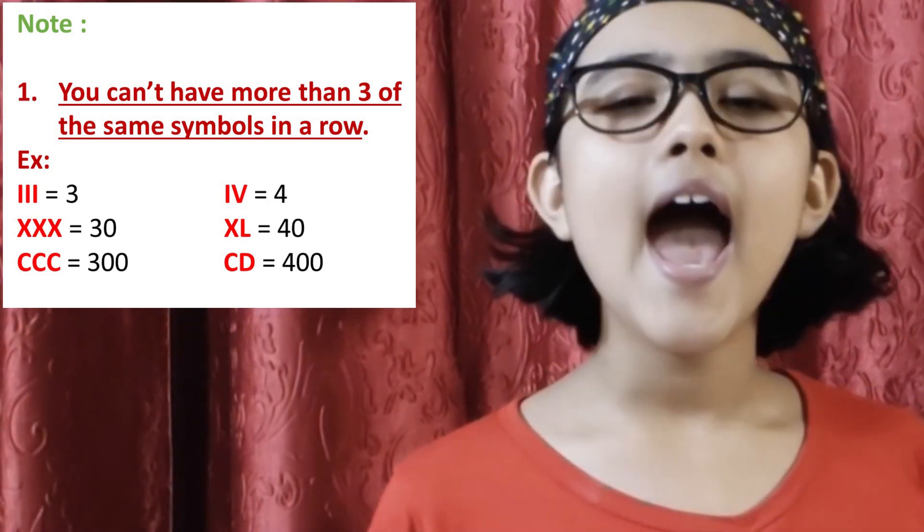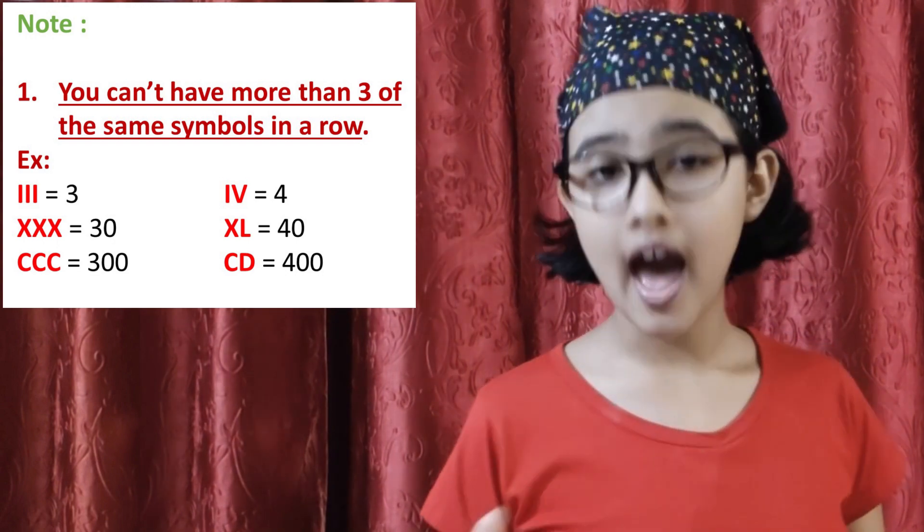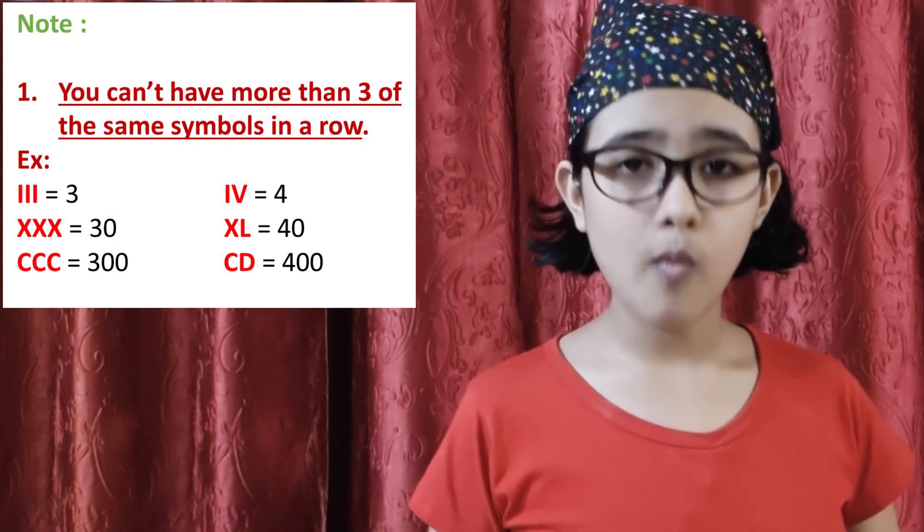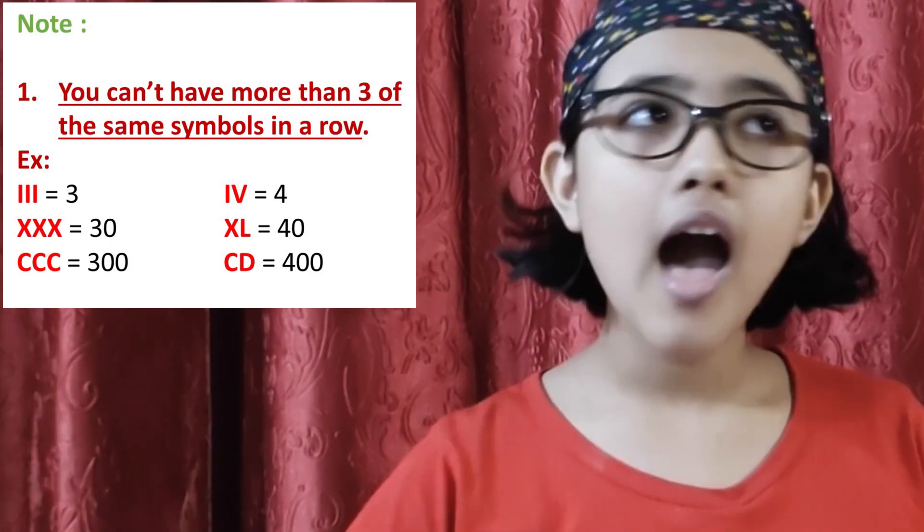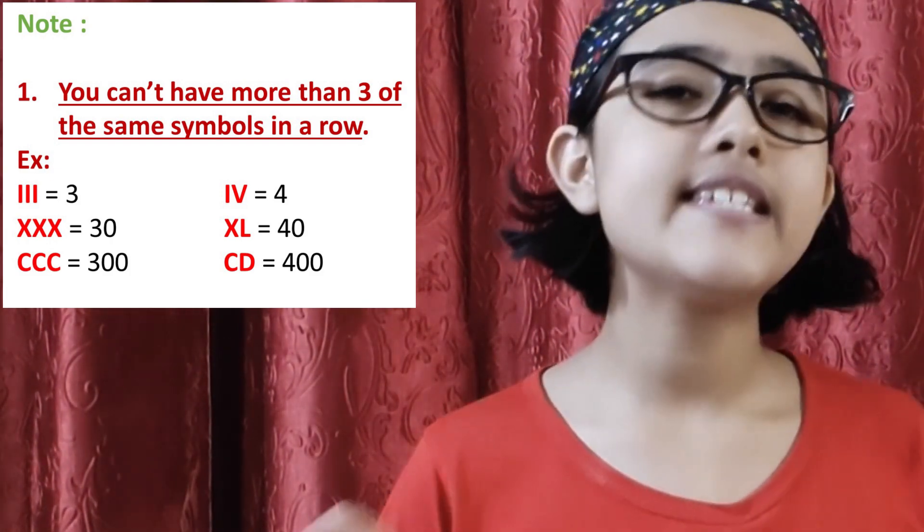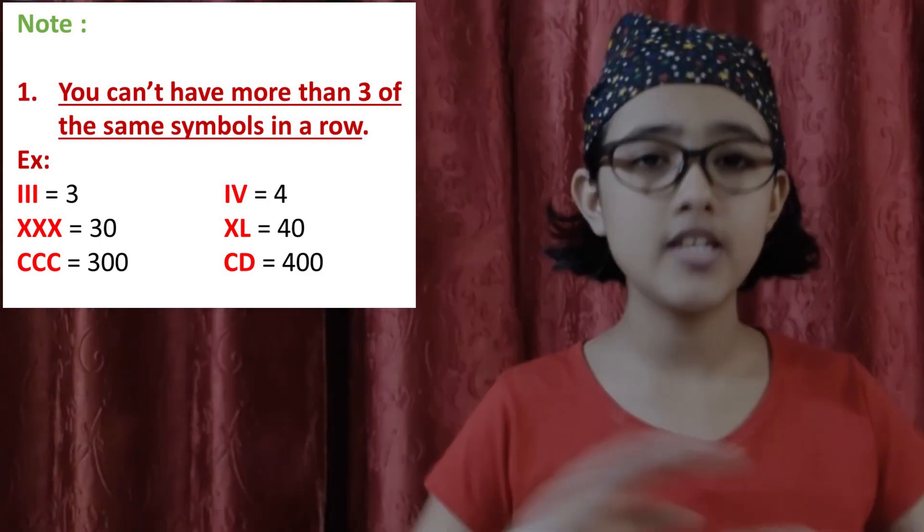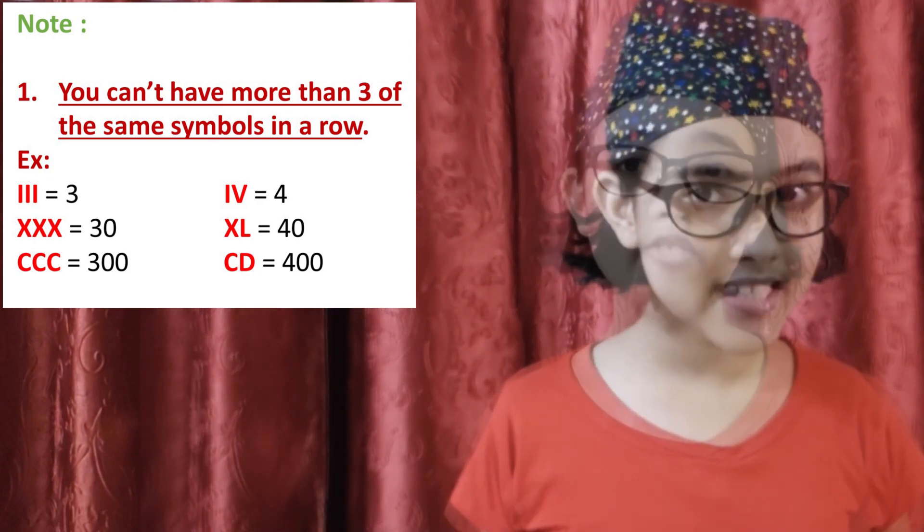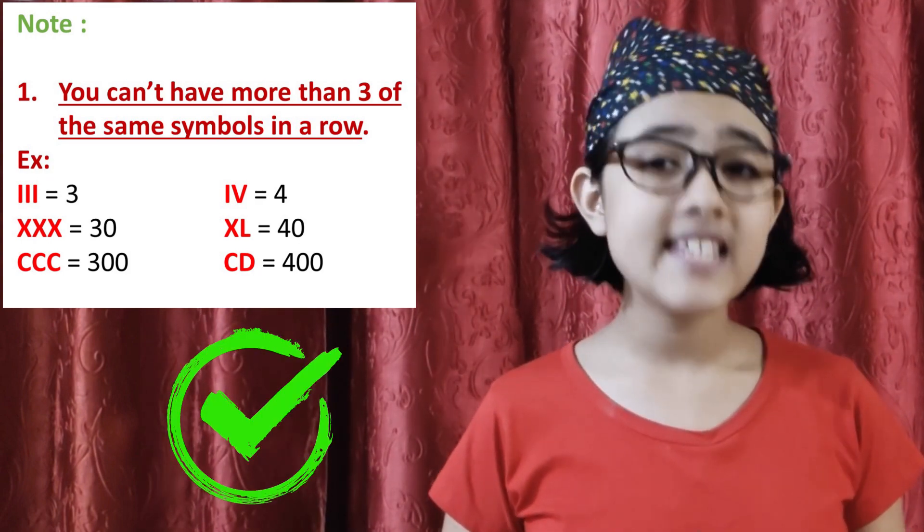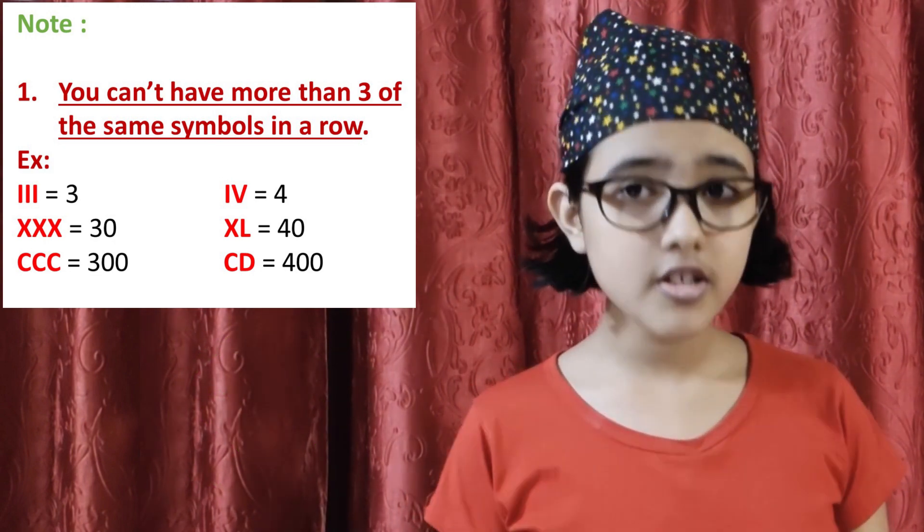L is 50 and X is 10, so XL is 40. You can't have IIII. Same happens with the ones place numbers. You must have IV as 4. You can't have IIII as 4. This is wrong. Same happens with the hundreds place. You must have CD as 400. So this is the first rule for you.